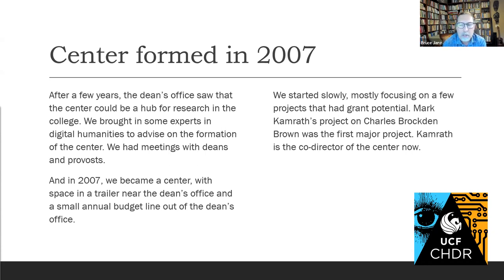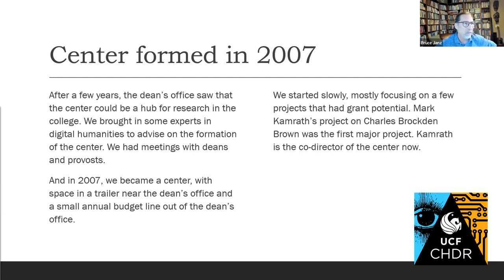In 2007 we became a center. We were given a space in a trailer near the dean's office and a small budget line — the same budget line we had in 2007, which we've been working on changing. We started slowly to work on projects. The first major one was Mark Cameron's project on Charles Brockton Brown, an early American writer. Mark collected all of Brown's original writings that had never been compiled before, and he was able to get sizable NEH grants based on the capacity we had started to build at UCF. The question of capacity is really important for being able to fund these sorts of things.